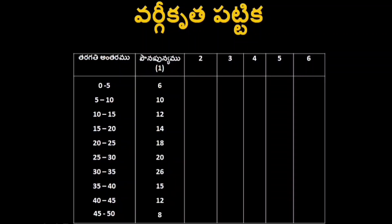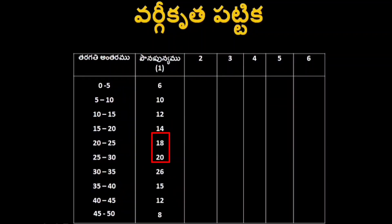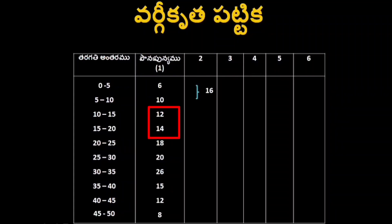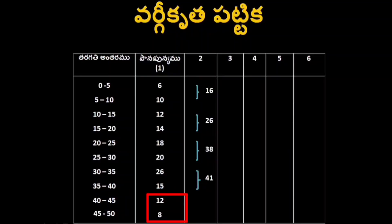So we can add two halves. Adding: 6 plus 10 is 16, then 16 plus 12 is 28 — that we can add: 12, 14. So we can add 26. Next: 18, 20 gives 38. Then 26, 15, 12, 8 — those are the last values.